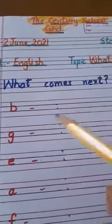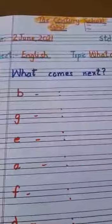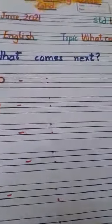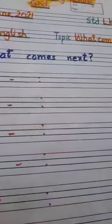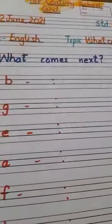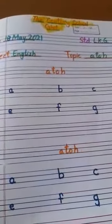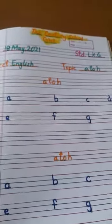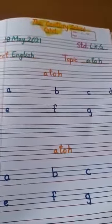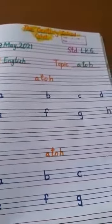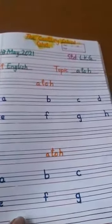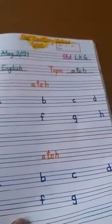What comes next? Dear students, we already had done this topic in Maths class, and now this is the English class topic. You see, students — these are small letters, A to H.